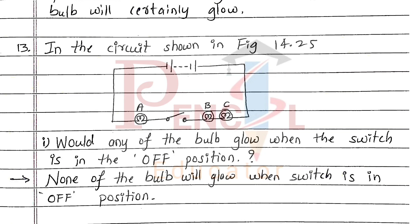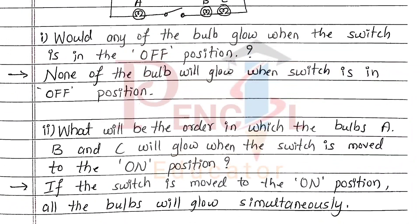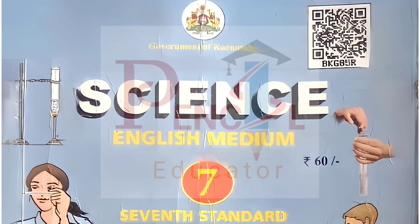Thirteenth one, in the circuit shown in figure 14.25. First, would any of the bulbs glow when the switch is in the off position? None of the bulbs will glow when the switch is in the off position. Second, what will be the order in which the bulbs A, B and C will glow when the switch is moved to the on position? If the switch is moved to the on position, all the bulbs will glow simultaneously.